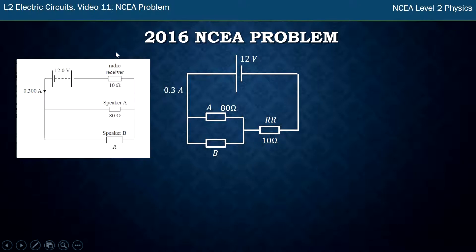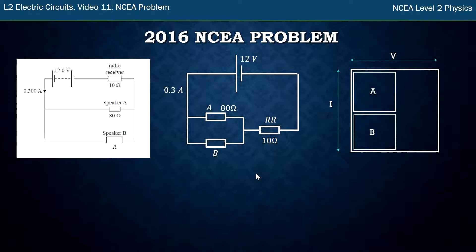So I've got my battery at the top 12 volts. My radio receiver which is in series, all the electricity has to pass through it, I'll put that down there, and then there's a parallel bit there with speaker A and speaker B. So now that I've got it like that I can draw myself an IV diagram. So A and B are in parallel so they go like that on top of each other and the radio receiver is there by itself.